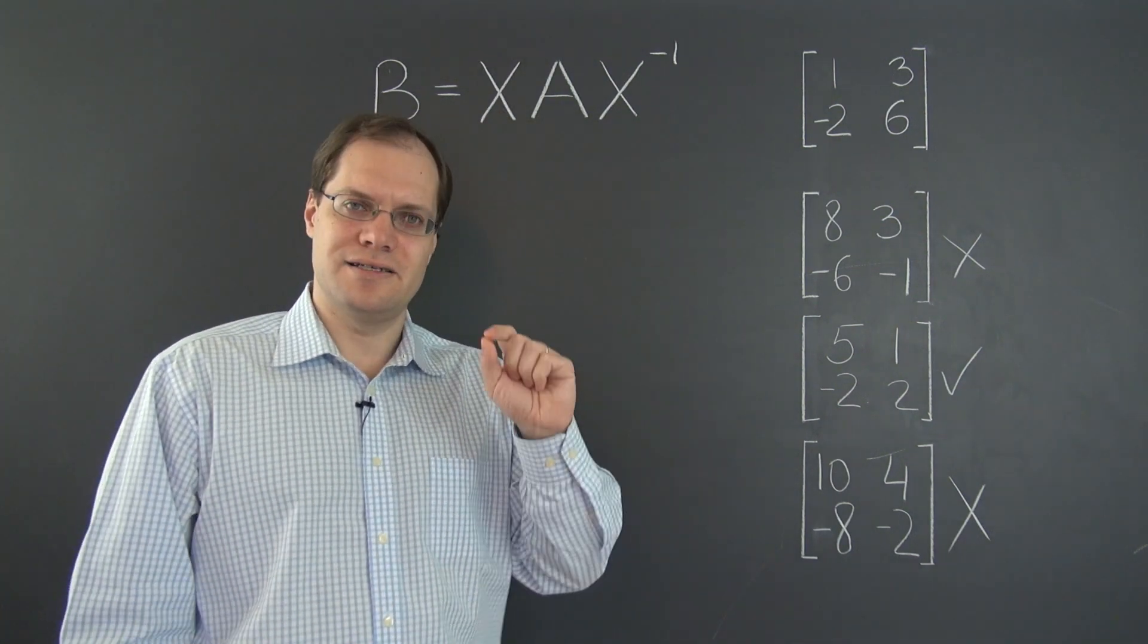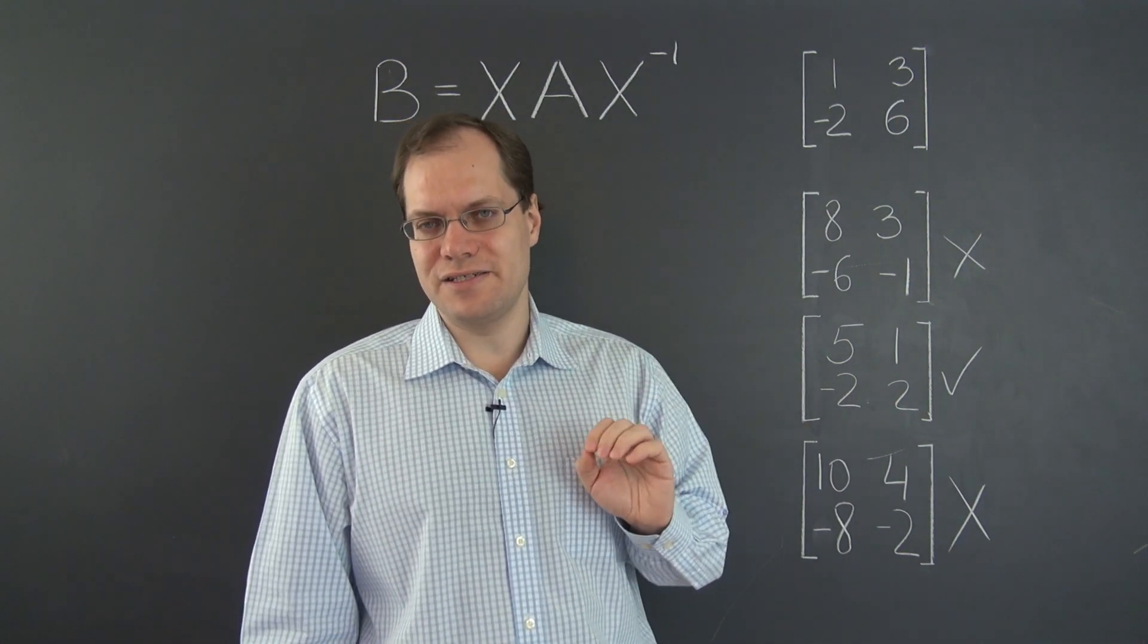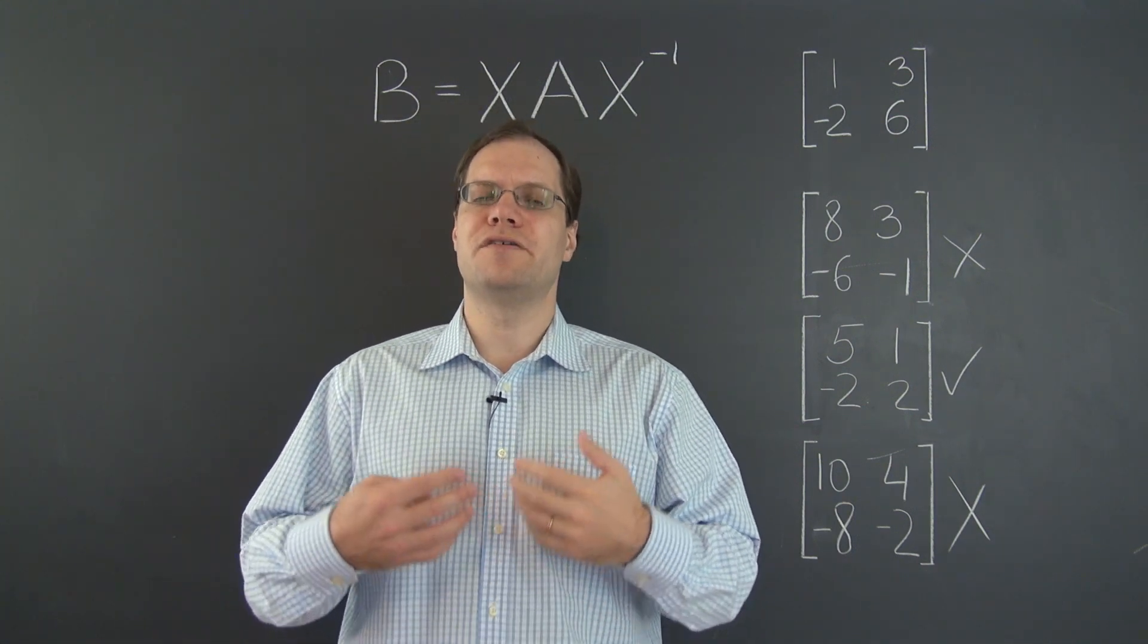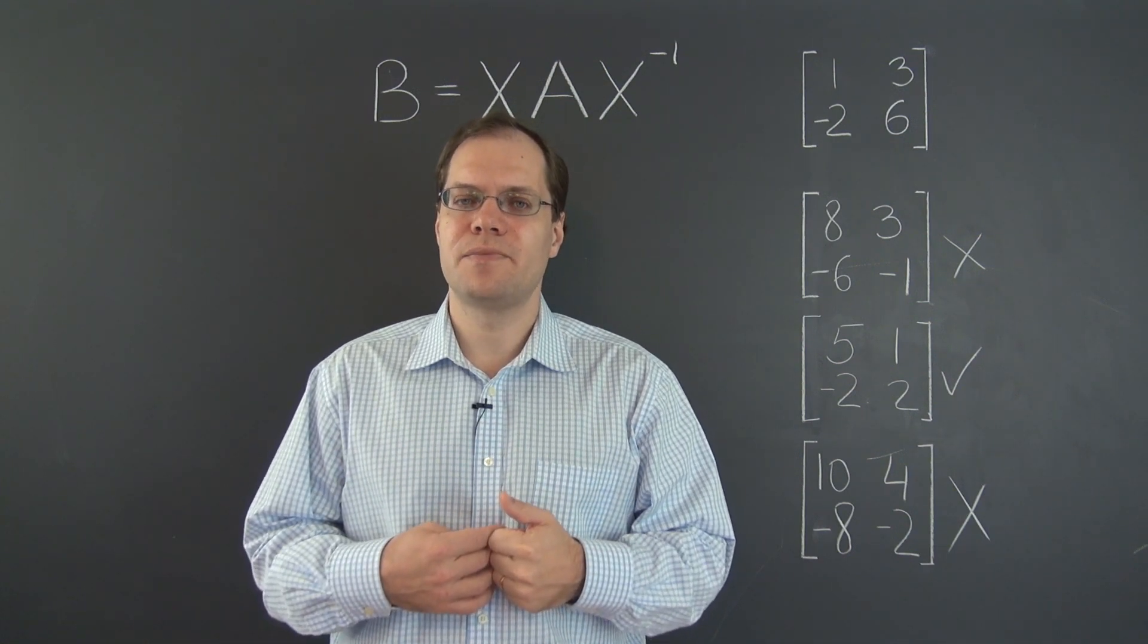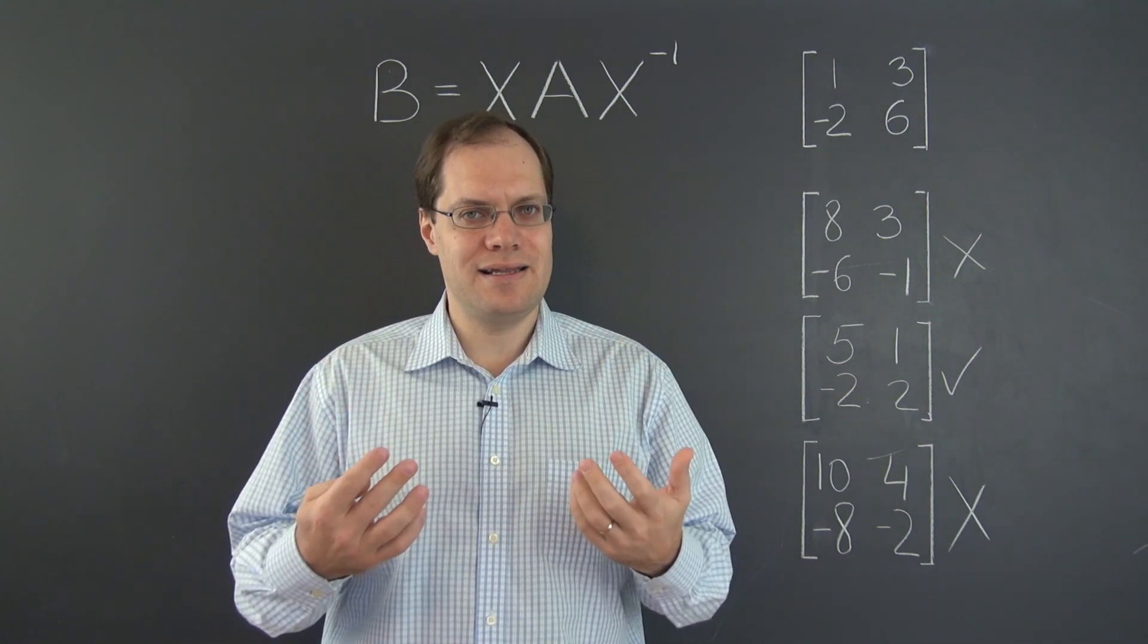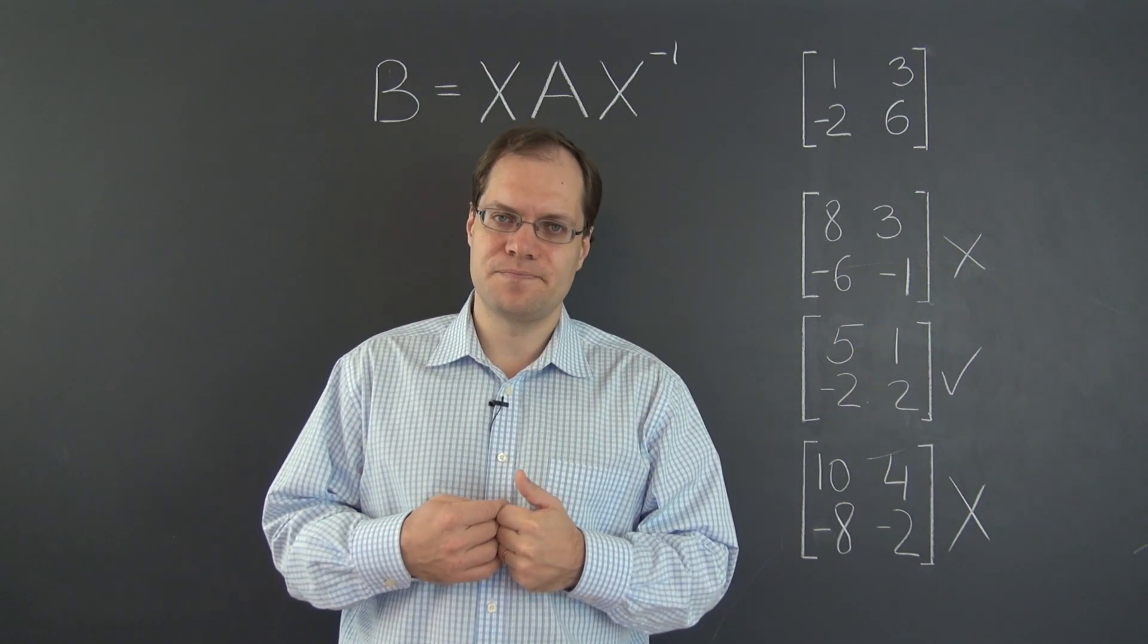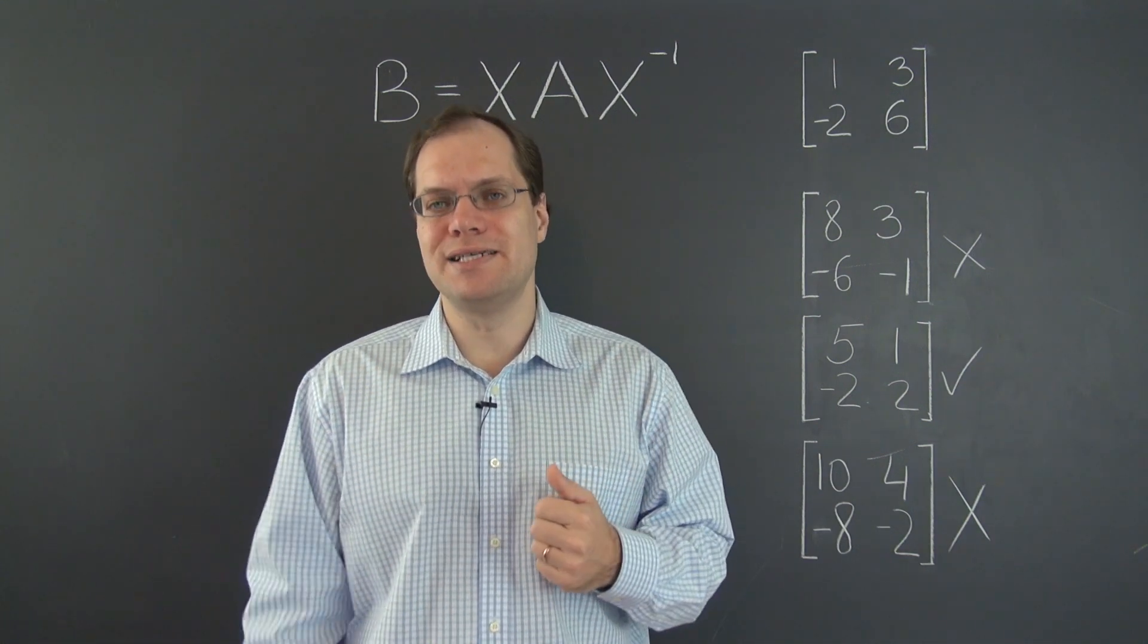So once again, the defective case will be a little bit tricky. So let's not think about the defective case for now and leave you with the following question. Suppose you have two matrices with identical eigenvalues and each with n linearly independent corresponding eigenvectors. And when I say identical eigenvalues, I also mean identical multiplicities.